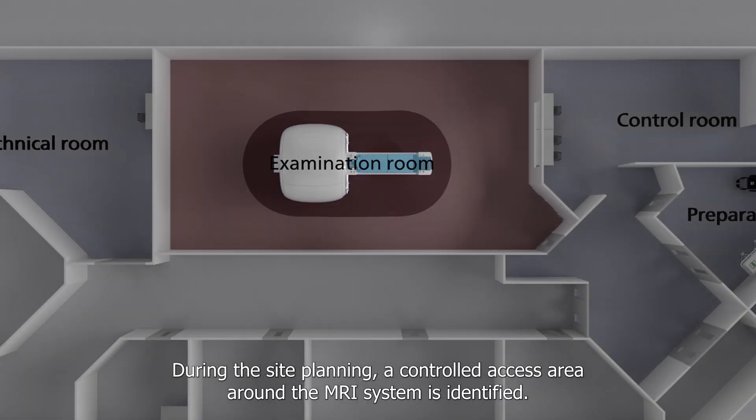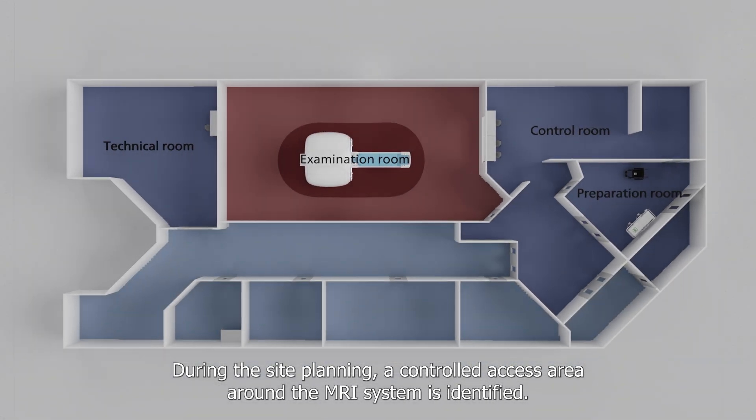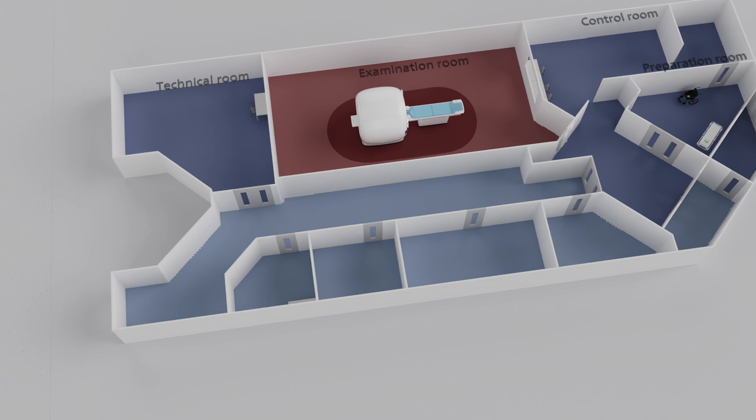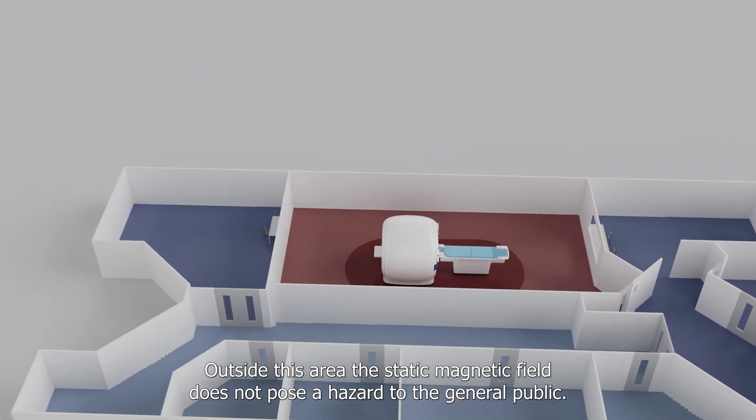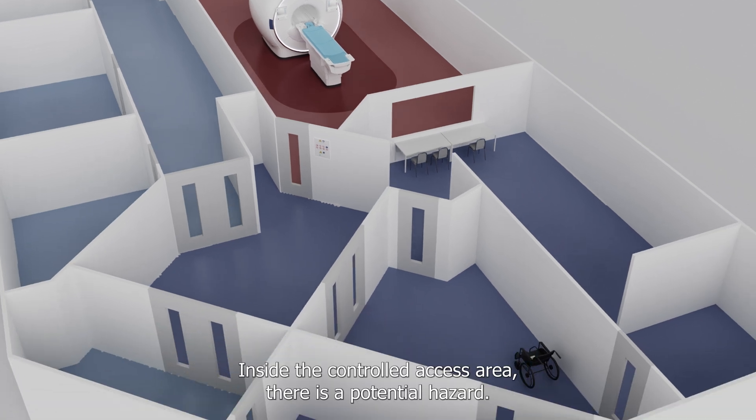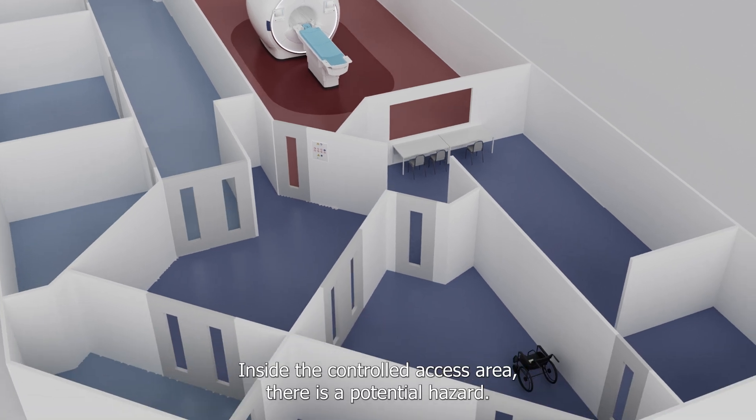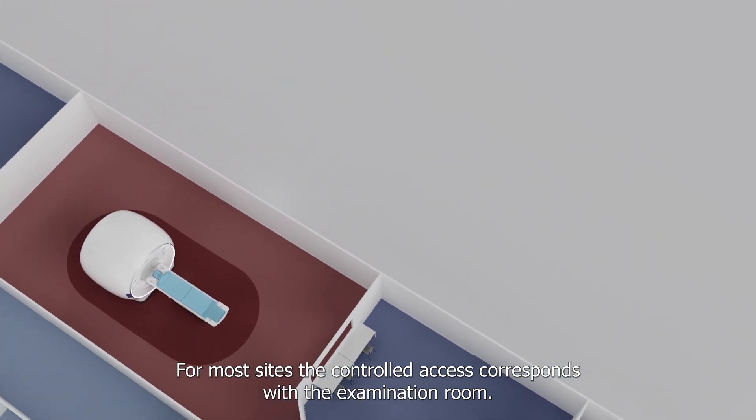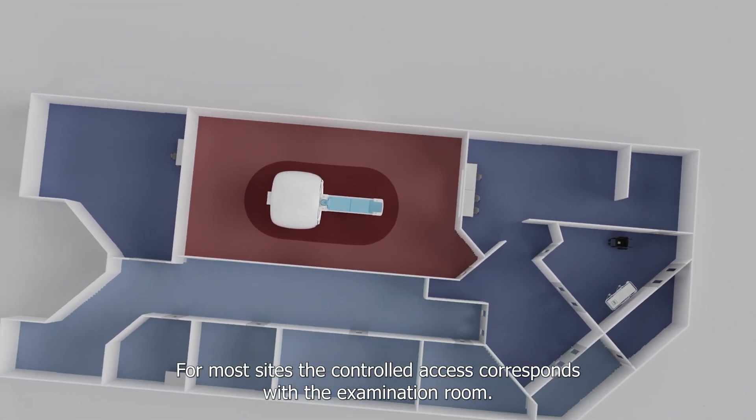During site planning, a controlled access area around the MRI system is identified. Outside this area, the static magnetic field does not pose a hazard to the general public. Inside the controlled access area, there is a potential hazard. For most sites, the controlled access corresponds with the examination room.